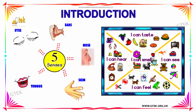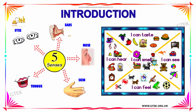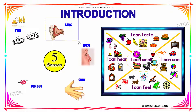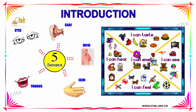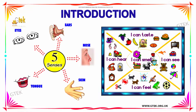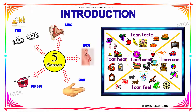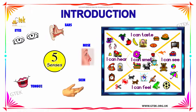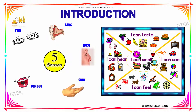If a person says that he can hear, it is the sense organ ears that helps him to hear. These are the five sense organs which help a person to feel his environment: eyes, ears, nose, skin, and tongue, which help a person to see, hear, smell, feel, and taste.